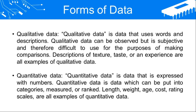Qualitative data can be observed but is subjective, and therefore difficult to use for the purpose of making comparisons. Descriptions of texture, taste, or an experience are examples of qualitative data. Qualitative data can be observed but not easily compared. For example, an experience at a water theme park is qualitative — no one can fully explain or quantify that experience.